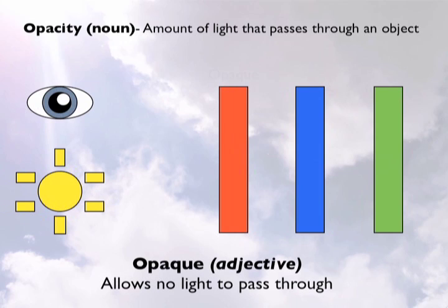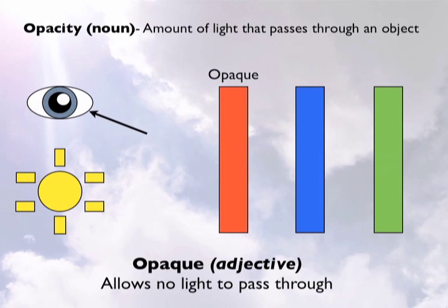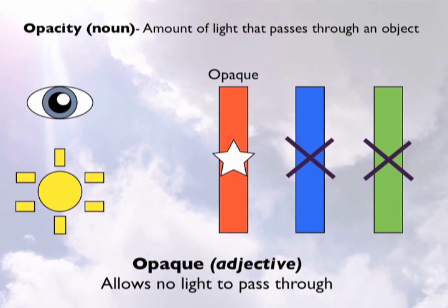For example, if the red shape is opaque, this means that light is not able to pass through the shape. Therefore, light reflects off the red shape and back to the viewer's eye. The viewer is unable to see the blue or the green shape behind the red shape.